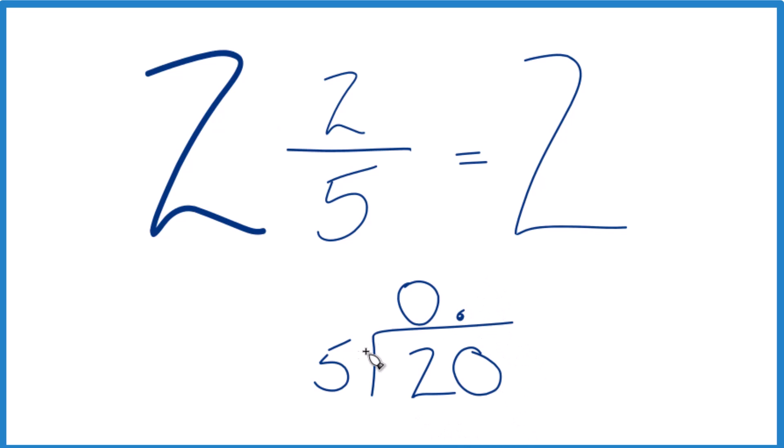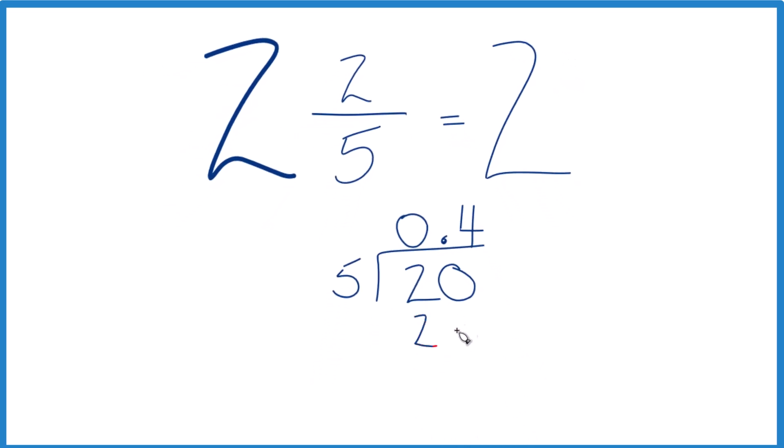now we can do it, because 4 times 5, that's 20, subtract, no remainder.